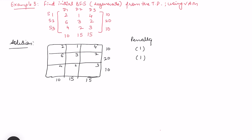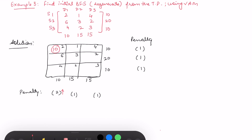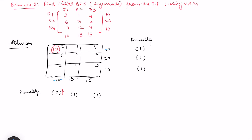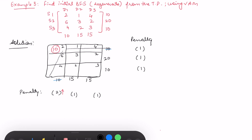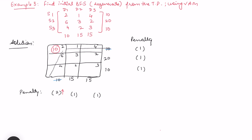In the first row the least is 1 and next least is 2, so the penalty is 1. In the next row the penalty is also 1 (difference of 2 and 3). In the third row the penalty is also 1. There is a lot of tie in the row penalties. Column-wise: first column penalty is 2 (difference of 2 and 4), second column is 1, third column is 1. The highest penalty is 2 in the first column. The least cost cell there has supply 10 and demand 20, but allocating 10 here exhausts both a row and a column simultaneously, which can reduce the basic cell count below m + n − 1.